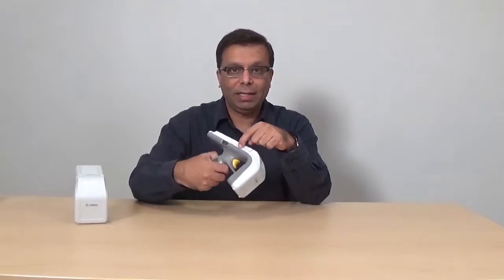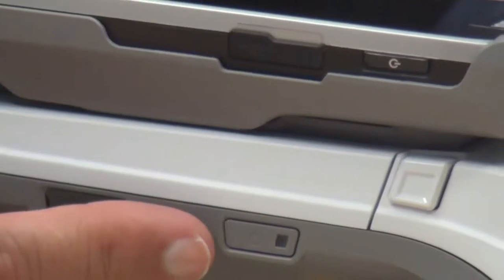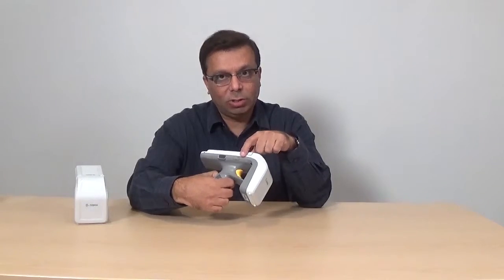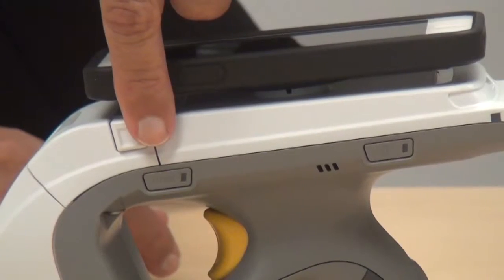On this RFD 8500, we have three switches. Power LED, power switch also has an LED built into the switch. Second switch is the mode switch. The mode switch allows you to toggle the operation between scanning and RFID.